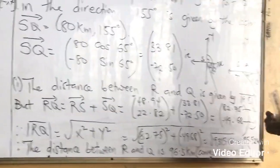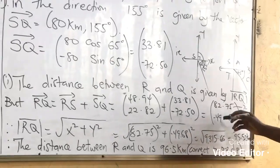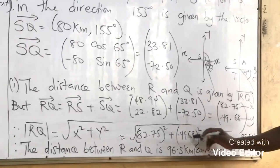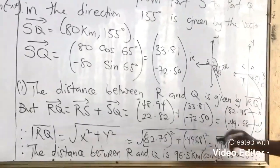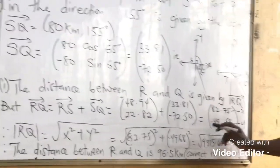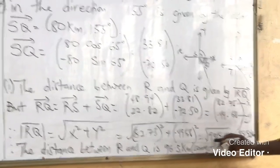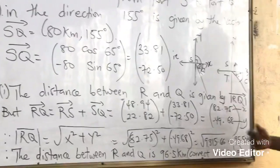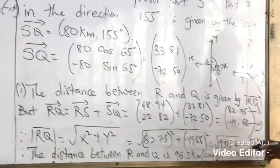So 82.75 squared plus negative 49.68 all squared. We will get square root of 9,315.66. And that is also given as 95.52 kilometers.